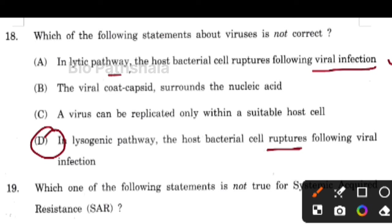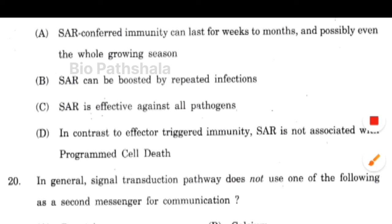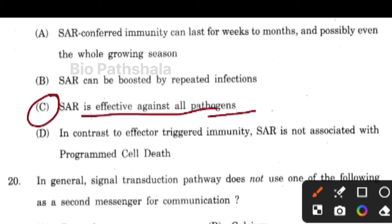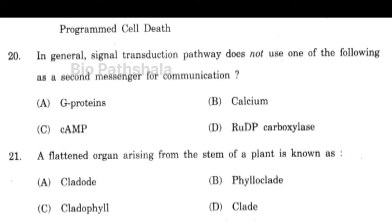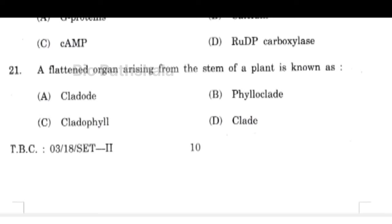Next question: which of the following statement is not true for systemic acquired resistance (SAR)? The answer is option number C — SAR is effective against all pathogens — it is not effective against all. Next question: in the general signal transduction pathway, which of the following is not used as a secondary messenger? G proteins are used, calcium is used, cyclic AMP is used — the one not used is option number D.